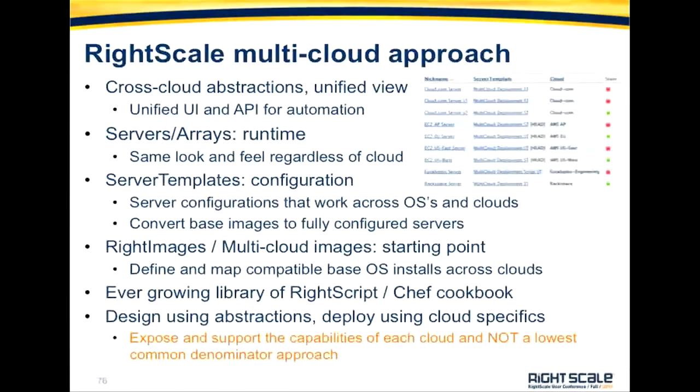So what are these abstractions? The first ones you're probably very used to are servers and server arrays — these are runtime abstractions. They define a way to manage something that runs in the cloud. For example, you can see a listing in a deployment of servers belonging to CloudStack, Rackspace, and Amazon Pacific East. They look the same, smell the same — you can start, stop, configure, monitor, and set alerts on them, all in the same way. That's what I mean by a unified abstraction that works across clouds.